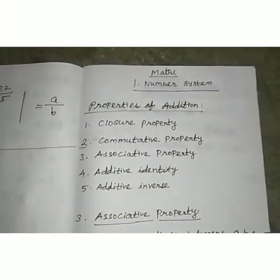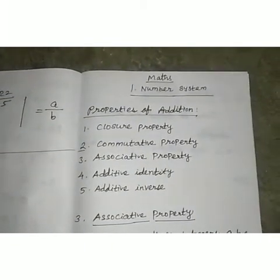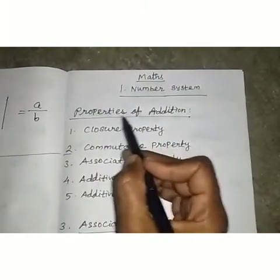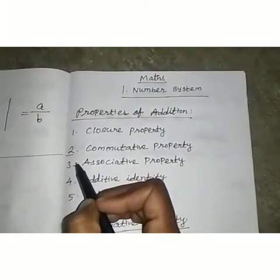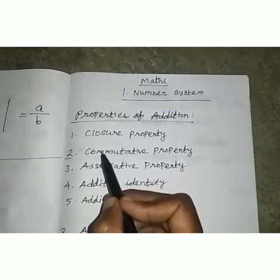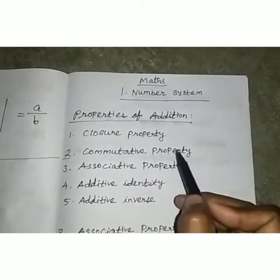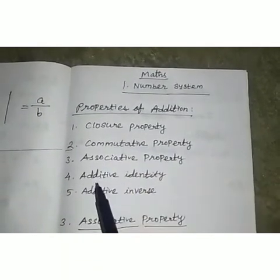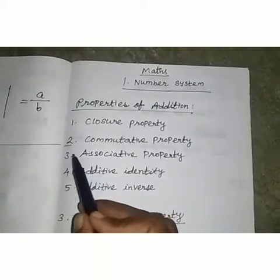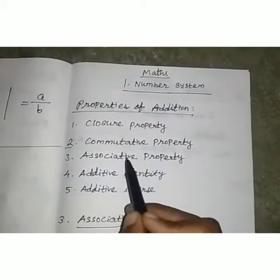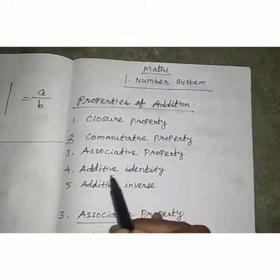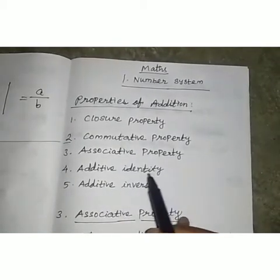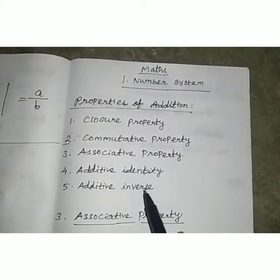Hi everyone. In previous class, we saw about the properties of addition — the first two properties: closure property and commutative property. Today we are going to learn about the third one: associative property, and also additive identity and additive inverse.